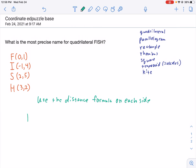Let's start with FI. I'll take the x's for F and I, find the difference between them, and square it. And I'll take the y's from F and I, find the difference between them, and square them.